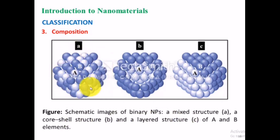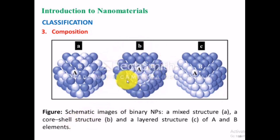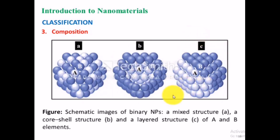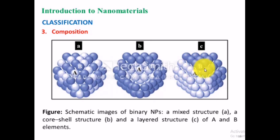Figure 1.6 illustrates the three composition types. Figure (a) shows mixed-structure nanoparticles where A and B atoms are randomly arranged within the cluster. Figure (b) shows the core-shell structure, where B atoms form the shell and A atoms are embedded in the core. Figure (c) shows the layered structure, where A atoms form one continuous layer and B atoms form a second continuous layer — this is called the layered or Janus structure. These layered nanoparticles tend to minimize bonds between elements A and B, and their heterojunction structure facilitates phase separation.